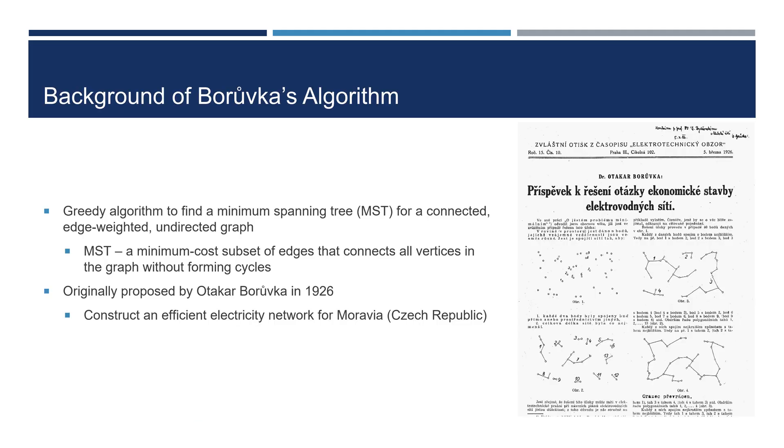Borůvka's algorithm is a greedy algorithm used to find a minimum spanning tree for a connected, edge-weighted, undirected graph. An MST is a minimum-cost subset of edges that connects all vertices in a graph without forming cycles.